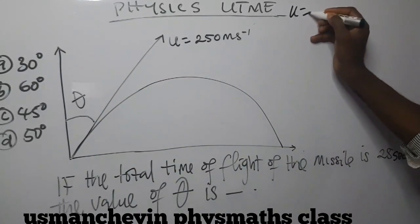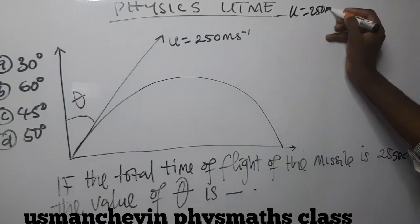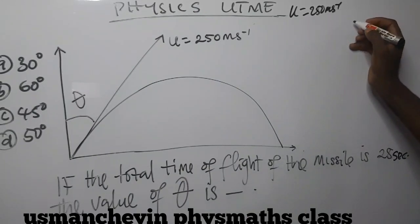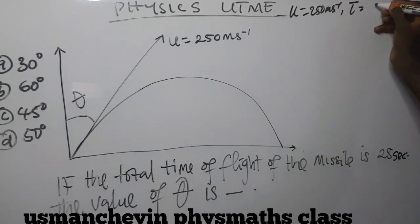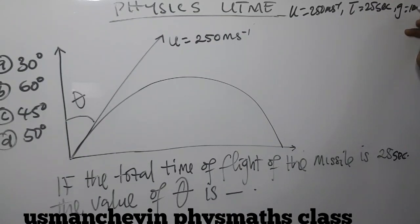Our U is equal to 250 meter per second. And our time of flight, T, is equal to 25 seconds. And our G is equal to 10 meter per second square.